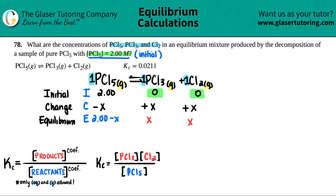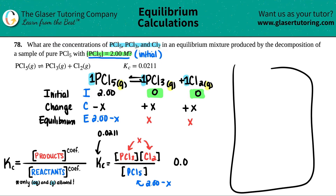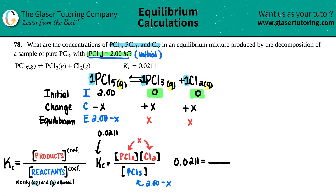Both products are x values, so I plug in x for each of them, and PCl5 is 2.00 − x. The Kc given is 0.0211. So: 0.0211 = (x)(x) / (2.00 − x). Since x times x is x², I can simplify the numerator to x².